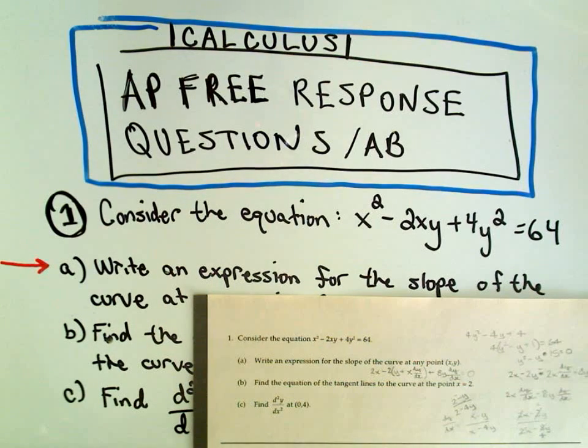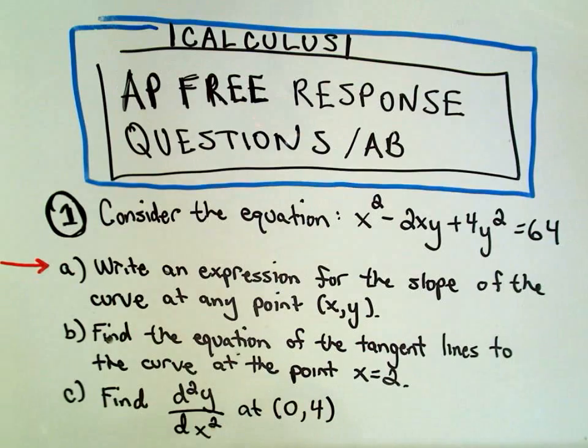Okay, in this video, I'm going to do some of the AP AB calculus free response questions. And the first question here, I basically have it written down. It says, consider the equation x squared minus 2xy plus 4y squared equals 64. And then there's three parts, A, B, and C.